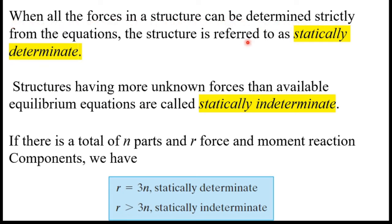When all the forces in a structure can be determined from the equations of equilibrium, the structure is referred to as statically determinate. Structures having more unknown forces than available equilibrium equations are called statically indeterminate. If there is a total of n parts and r force and moment reaction components: if r equals 3n, the structure is statically determinate; if r is greater than 3n, the structure is statically indeterminate.